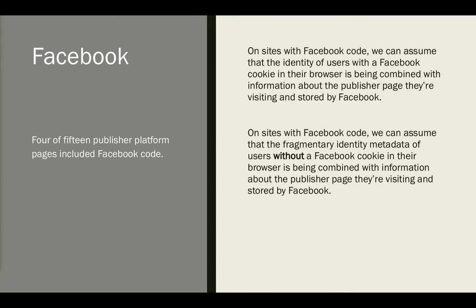So how does this work? Take the example of Facebook. Four of the 15 platforms included Facebook code on their page. On sites with Facebook code, we can assume that the identity of users with a live Facebook cookie in their browser — that means if you use the 'remember me on this computer' or 'save my login' function — their visit to that page is going to be stored and attributed to their Facebook identity.